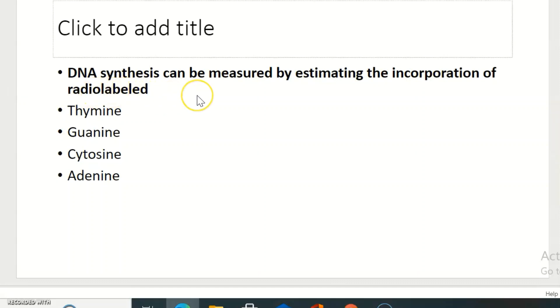DNA synthesis can be measured by estimating the incorporation of radiolabeled thymine, guanine, cytosine and adenine. The right answer is thymine.